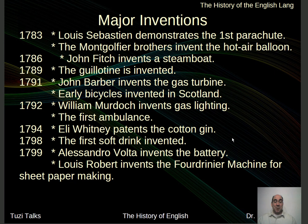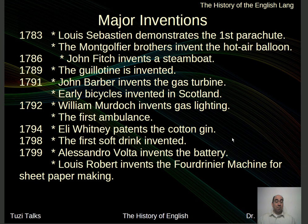Some other major inventions: Louis Sebastian demonstrates the first parachute — I don't know how he got up there, but he invented it. The Montgolfier brothers invent the hot air balloon in 1783. John Fitch invents a steamboat in 1789. The guillotine is invented, and some 25 years later it's going to be used very well in France during the French Revolution. John Barber invents the gas turbine in 1791, moving toward possibly using it for the creation of motors for automobiles. Also in 1791, an early bicycle is invented in Scotland — it's a hundred years later that the Wright brothers, who were bicycle builders, begin to use that for building a plane.